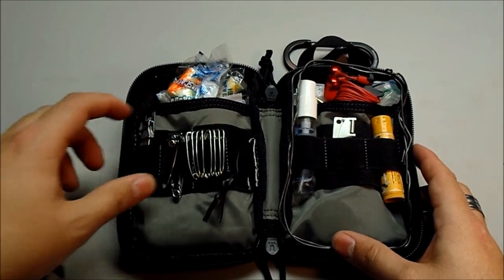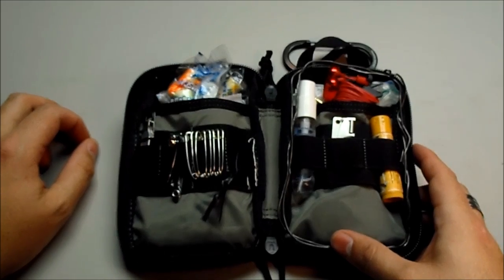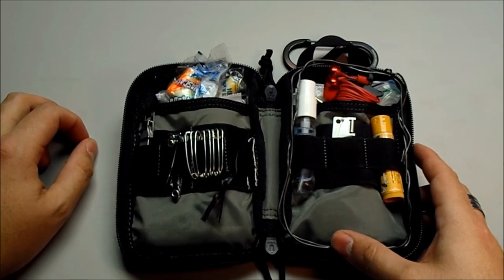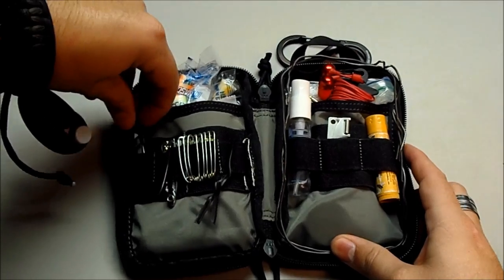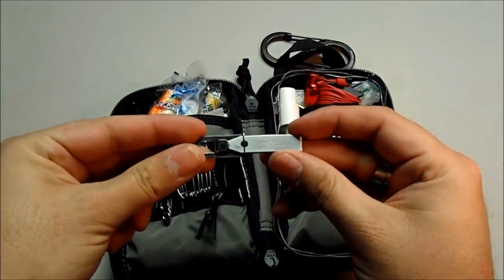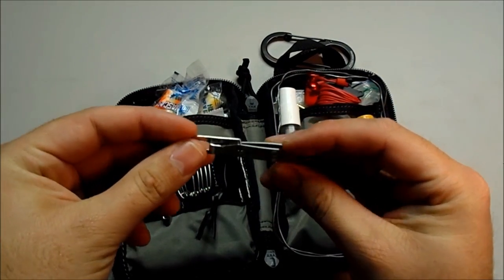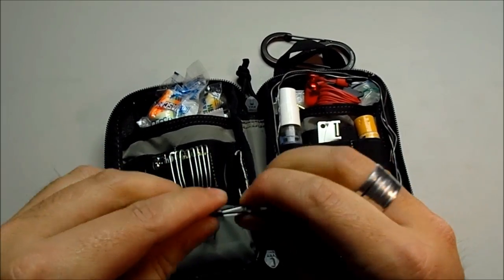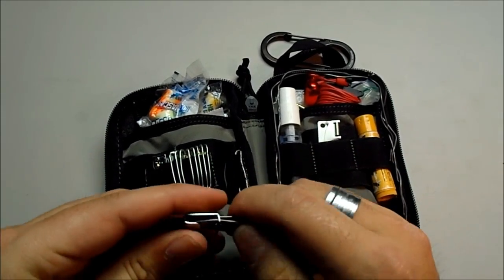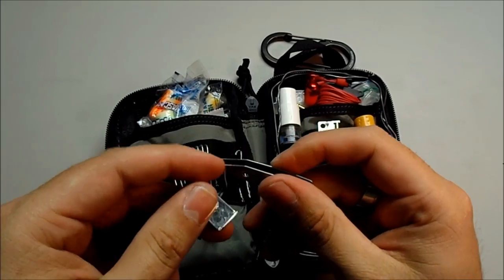Carry some safety pins. Those are always useful. You can use one as a needle. You can use them to hold a tear together, that kind of thing. Got an Uncle Bill's tweezer here. Very light and simple. Really try to shave weight off everything I can. You add up everything and you can really build it up. So try to go as light as possible with everything.